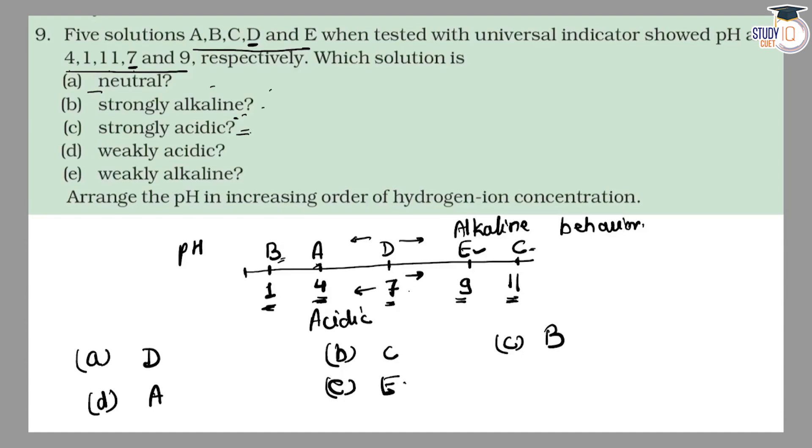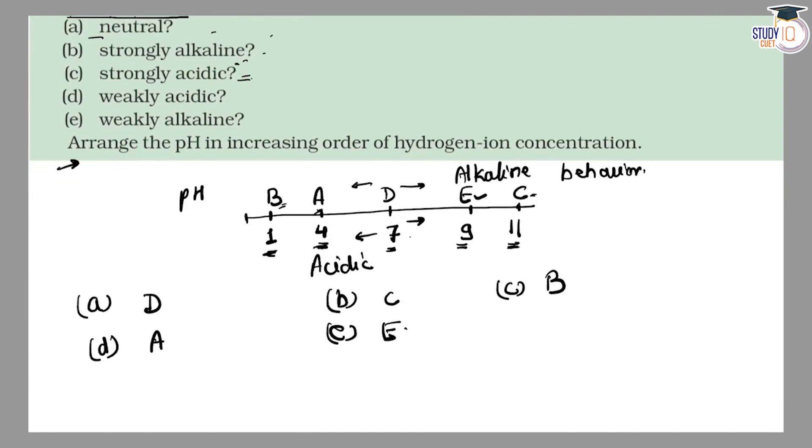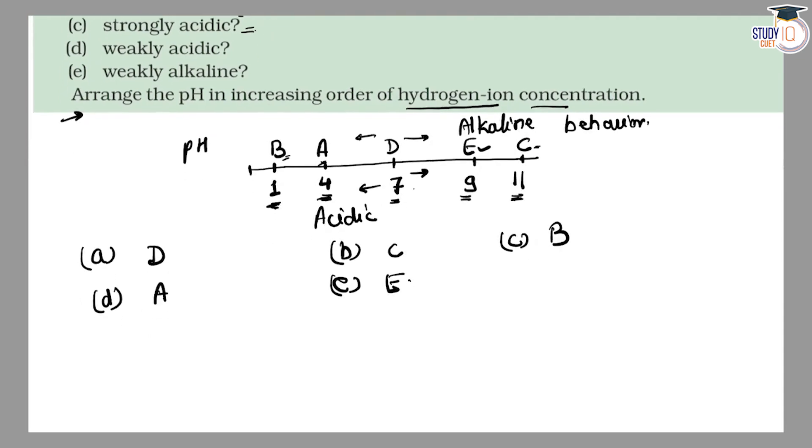So you have the answers. And now the second part: Arrange the pH in increasing order of hydrogen ion concentration. The more acidic it is, the more hydrogen ion concentration. Means the smaller the pH value, the higher the hydrogen ion concentration.